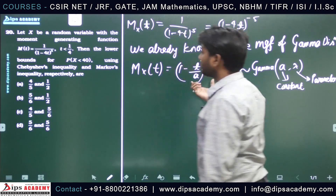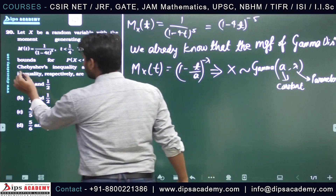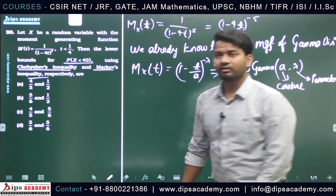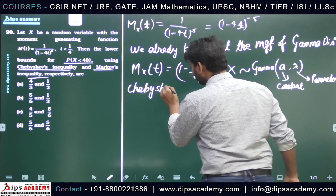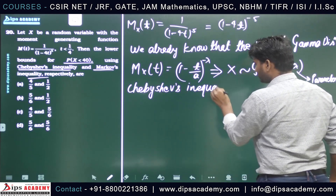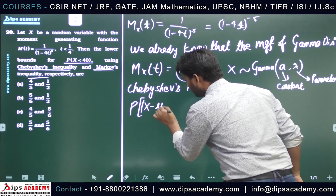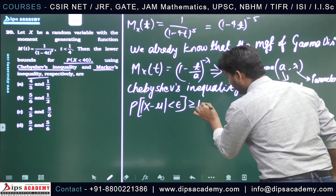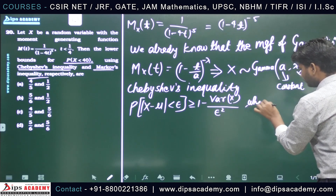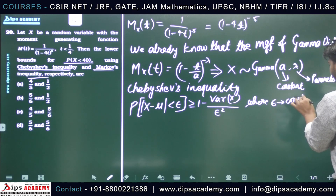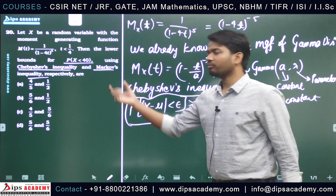Now we will use this information to solve the question. We will use Chebyshev's inequality and Markov inequality to find the probability that x is less than 40. The Chebyshev inequality states: P(|x - μ| < ε) ≥ 1 - Var(x)/ε², where ε is a constant.